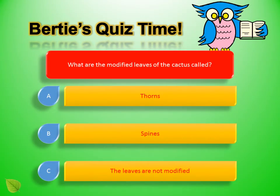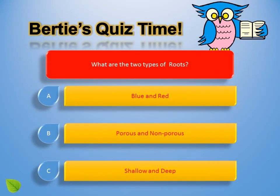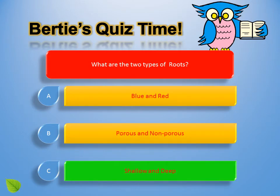Select the correct option — what are the modified leaves of the cactus called? A. Thorns, B. Spines, C. The leaves are not modified. Spines are the modified leaves of the cactus. Next question — the two types of roots of the cactus are: blue and red, porous and non-porous, or shallow and deep? The answer is shallow and deep.